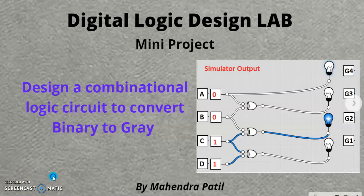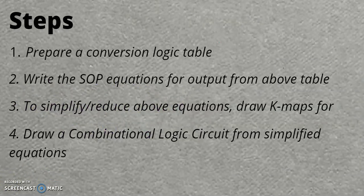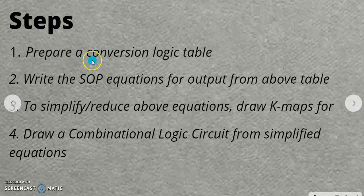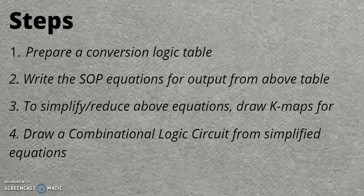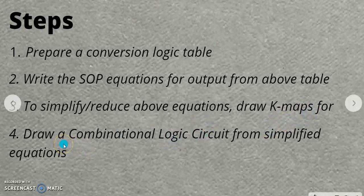Now we will see the steps to convert binary code to grey code and the conversion logic table for it. The first step is to prepare a conversion logic table. After that, we need to write SOP equations for the outputs from that table. After obtaining the SOP equations, we need to simplify them using KMAPs. KMAPs are a very easy method to reduce any expression. After simplifying, we draw the combinational logic circuit.